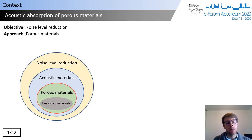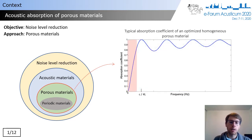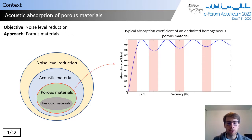Let's start with a short context introduction. If you want to reduce the noise level, for instance in a room, you can put acoustic materials on its walls. This acoustic material can be made of porous materials. When you look at the absorption coefficient of a homogeneous porous material, you see that it is quite high in the high frequency range, but due to the inherent loss process of porous material, the absorption coefficient is very low in the low frequency range. Moreover, the absorption coefficient is not perfect as there are some ripples.